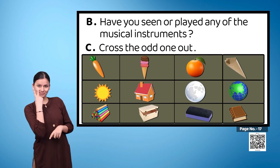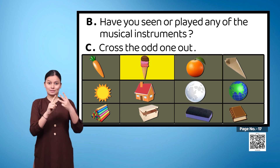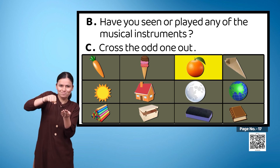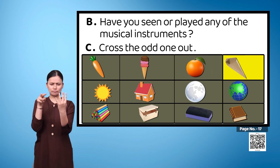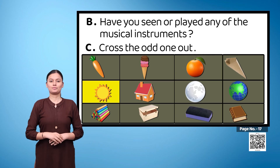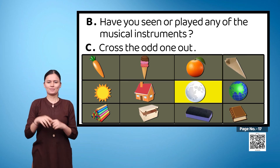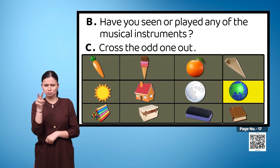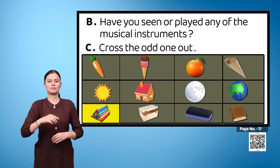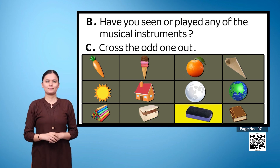You have to cross the odd one out. The first image in the first row is of a carrot, followed by an ice cream cone, then an orange, and finally a paper cone. In the second row we have a sun, house, moon, and earth. The third row has a chalk, a wooden box, a duster, and a book.